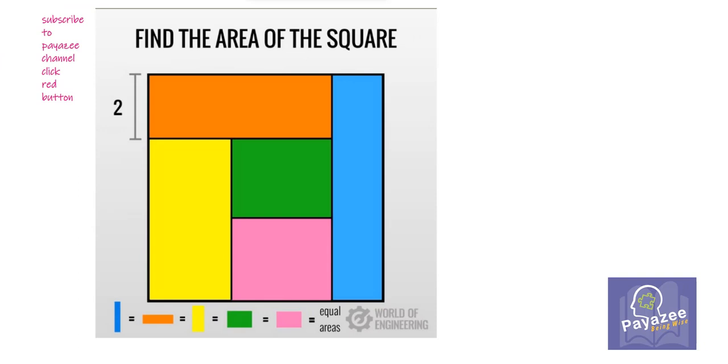Now let's start with the solution. In this puzzle, we have got this orange rectangle with only one side value which is 2. Let's consider this value as x. So area of this rectangle will be 2x. As per this clue, all the shapes have equal area. So this will be 2x, 2x, 2x and 2x.